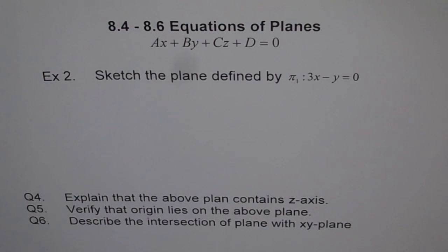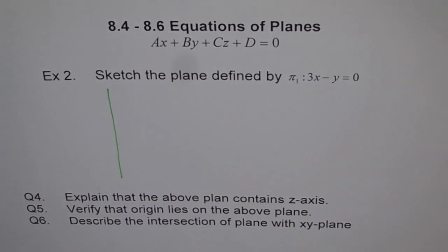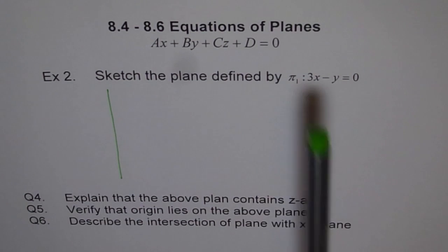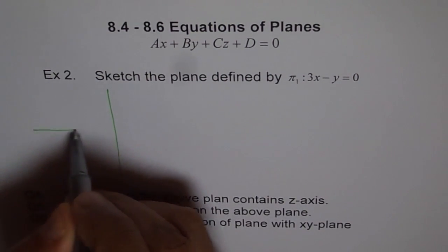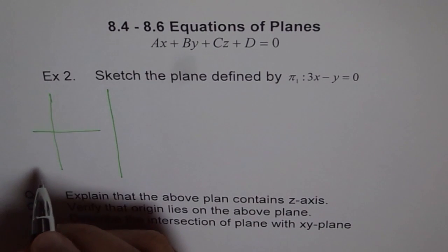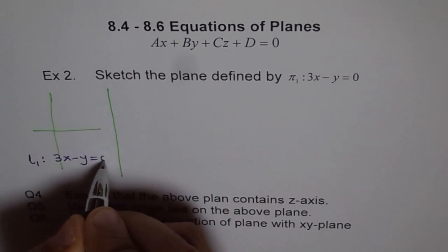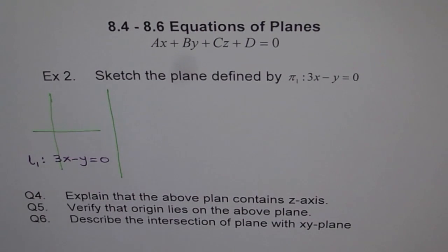Equations of planes, example 2: sketch the plane defined by π₁: 3x minus y equals 0. Just as we discussed in example 1, I will go back to lines first and then sketch a plane. I thought this approach will help you out. Let's first understand the line 3x minus y equals 0. So we are trying to do line L which is 3x minus y equals to 0.